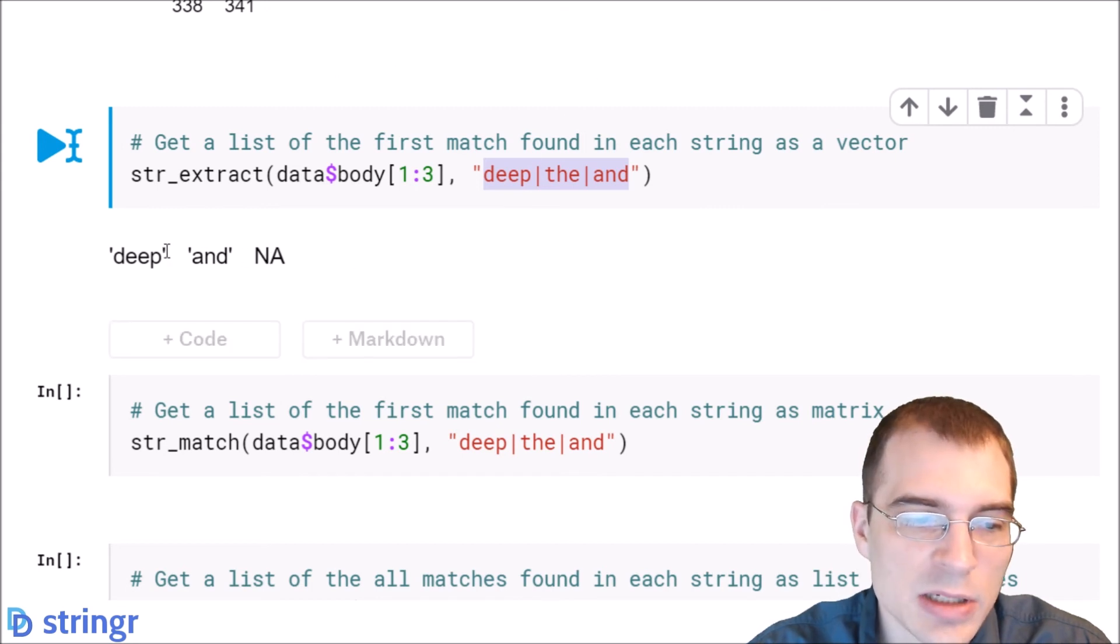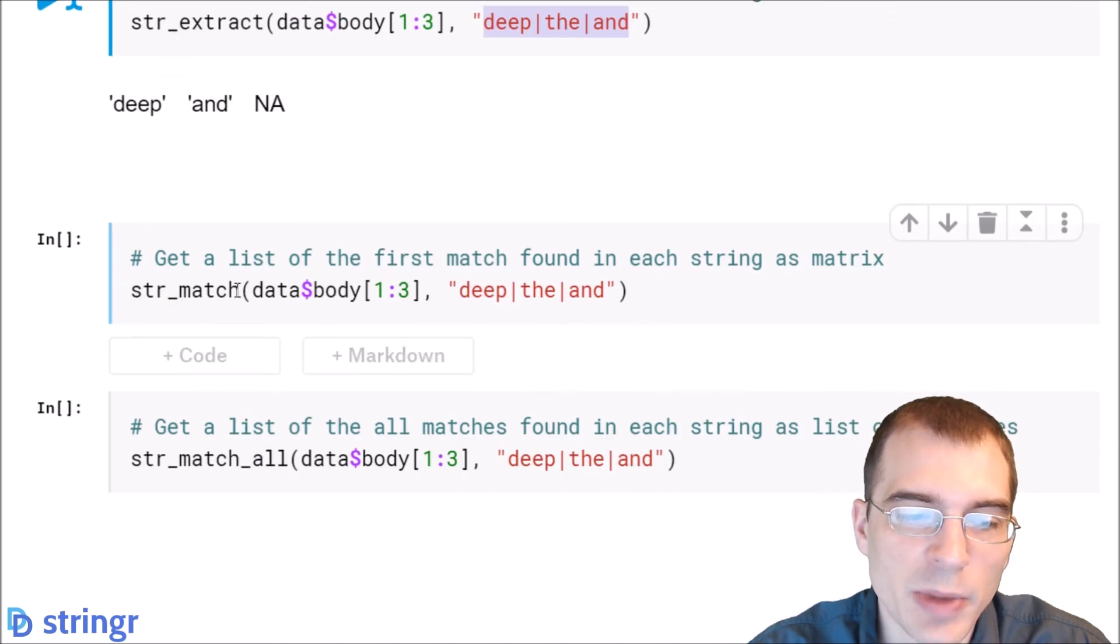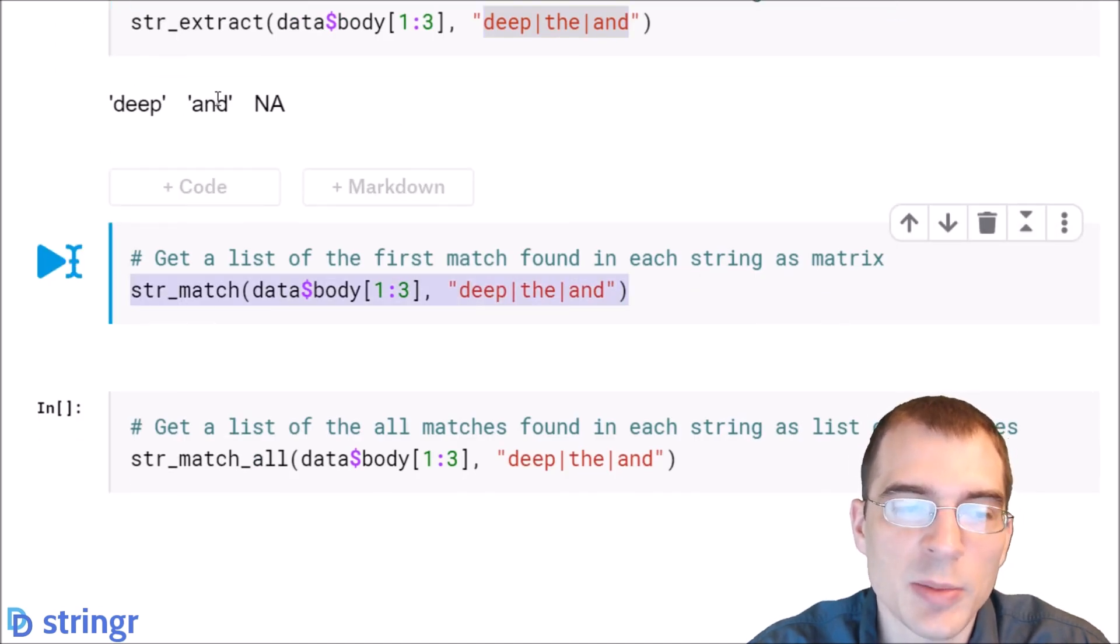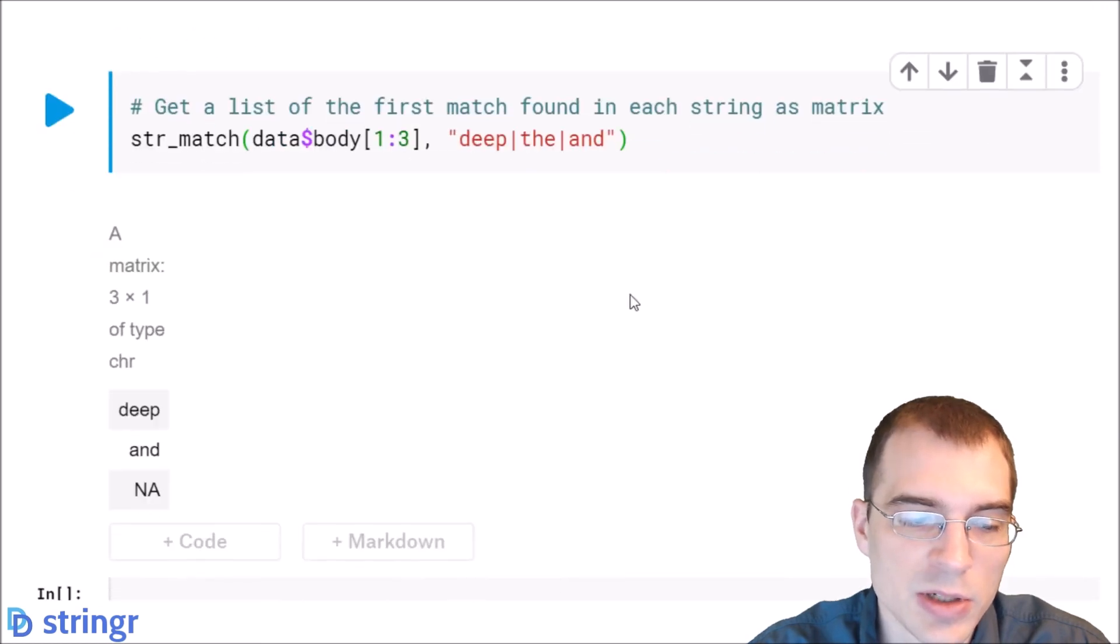Now, if you want to do the same thing as this, but get the values back in a matrix instead of a vector, you can do that with str_match. This is essentially going to do this same thing, but these values will just be in the form of a matrix instead.